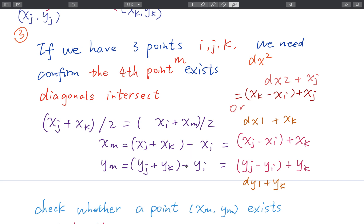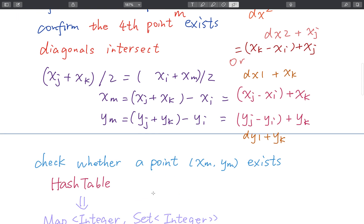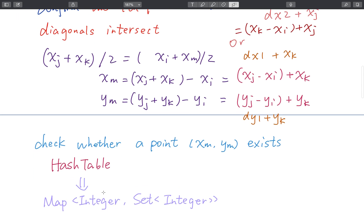Well, we can use a hash table. I think the simplest way is just use a hash map. The key is the integer, which is the X coordinate. And this set will be the set of coordinates Y, because there may be some points they share the same X coordinate.